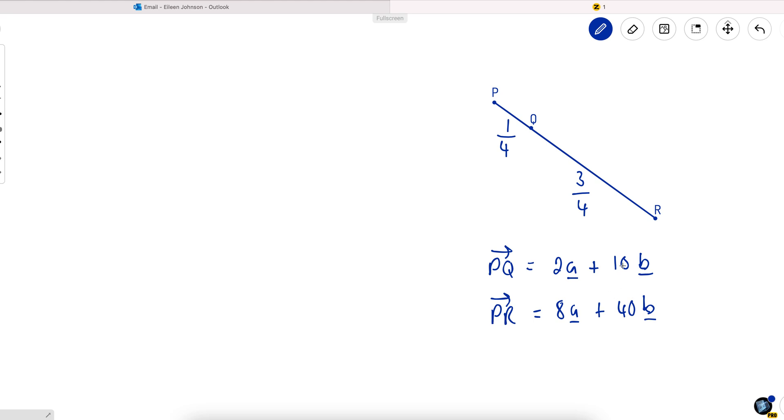So if I just relate the coefficients of A and B to each other, the coefficient of B is five times the coefficient of A, and the coefficient of B here is five times the coefficient of A, and that's always the case when two vectors are heading in the same direction. If you divide one component by the other, it will always give you the same number for each.